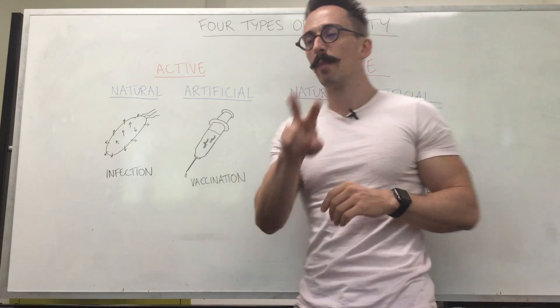When we look at passive, when something's passive, it means you're not doing anything about it. In active, you are creating the antibodies. In passive, you're not creating the antibodies. You're simply receiving already made antibodies. So how does this happen?